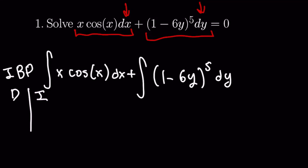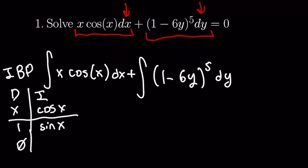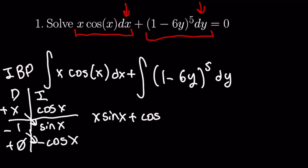On the left side we'll have derivatives, and on the right side we'll have integrals. Here we have our function x, and here we have cosine x. Taking derivatives down this side we'll have 1 and 0, and integrating this side we'll have sine of x and negative cosine x. Matching on the diagonal with alternating signs — plus, minus, plus — we'll have plus x sine of x, and these two negatives will cancel out giving us plus cosine x, plus a constant c for this first integral.